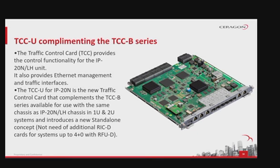The traffic control card, TCCB series or the new TCCU, provides control functionality for IP20N, IP20A, and IP20 long-haul systems, and also provides Ethernet management and traffic interfaces. The TCCU for IP20N is a new traffic control card that complements the TCCB series, available for use with the same chassis in one or two rack unit systems. It introduces a new standalone concept not requiring additional cards for systems up to 4+0 with RFUD. More information about TCCU is available in separate modules and training courses.